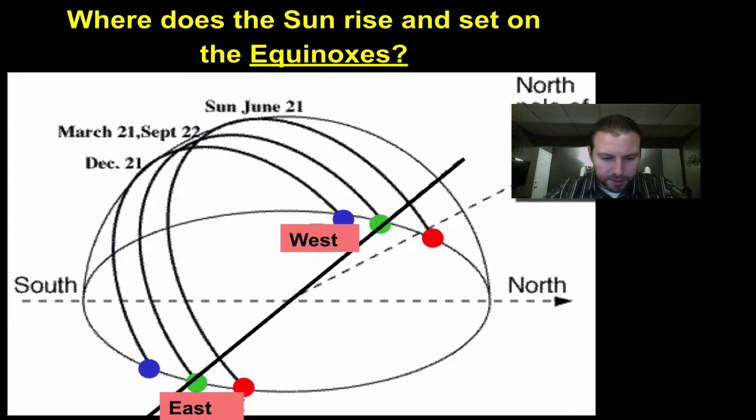On the equinoxes, remember the sun's rays, the sun's going to rise and set directly on the east. This will be our answer for that. So we have to look at where the sun is rising and setting. If it's directly on the east and west, we know it's one of the equinoxes.